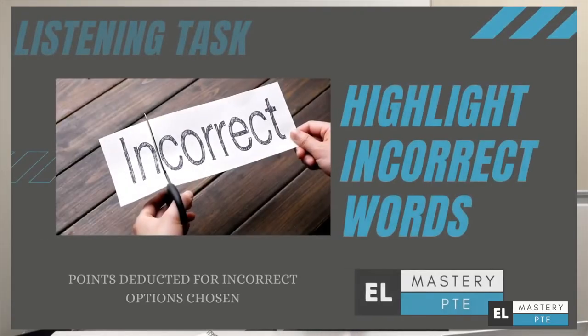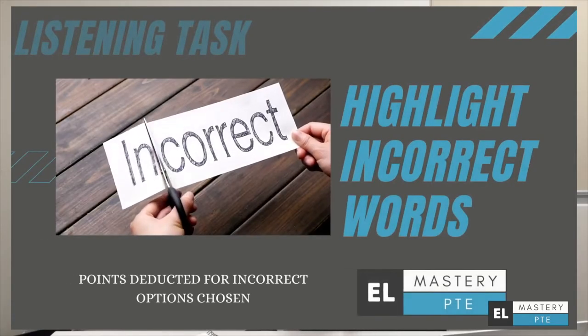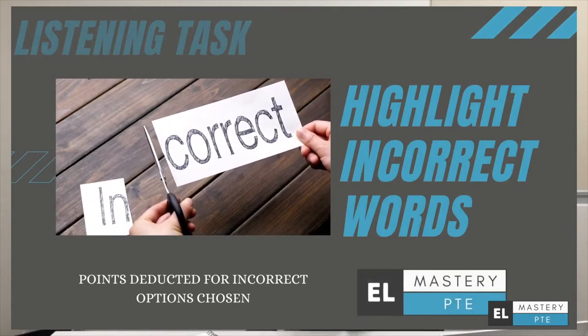There are two exercises where there is negative marking, and where a lot of students tend to lose marks simply because they were not aware of it. Without much ado, I'll start with the first exercise, which is pretty much the easiest exercise in the PTE exam. All you need to do is listen carefully and pay attention — that's it. That exercise is called Highlight the Incorrect Words.